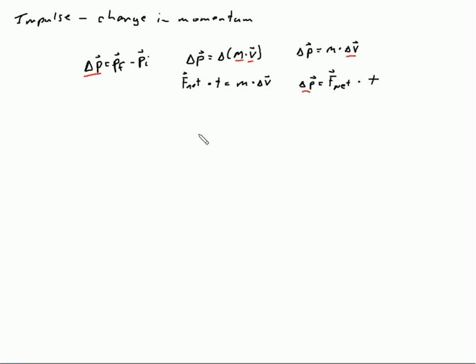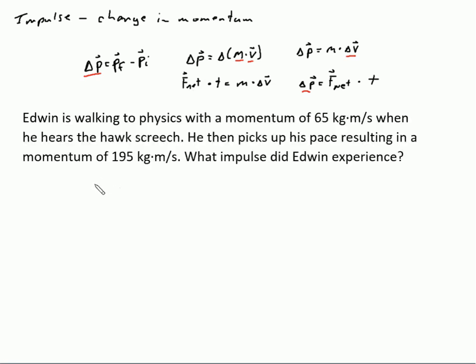A couple of example problems on how to solve for various parts of impulse. Edwin is walking to physics with a momentum of 65 kilograms meters per second when he hears the hawk screech. He then picks up his pace resulting in a momentum of 195 kilogram meters per second. What impulse did Edwin experience?